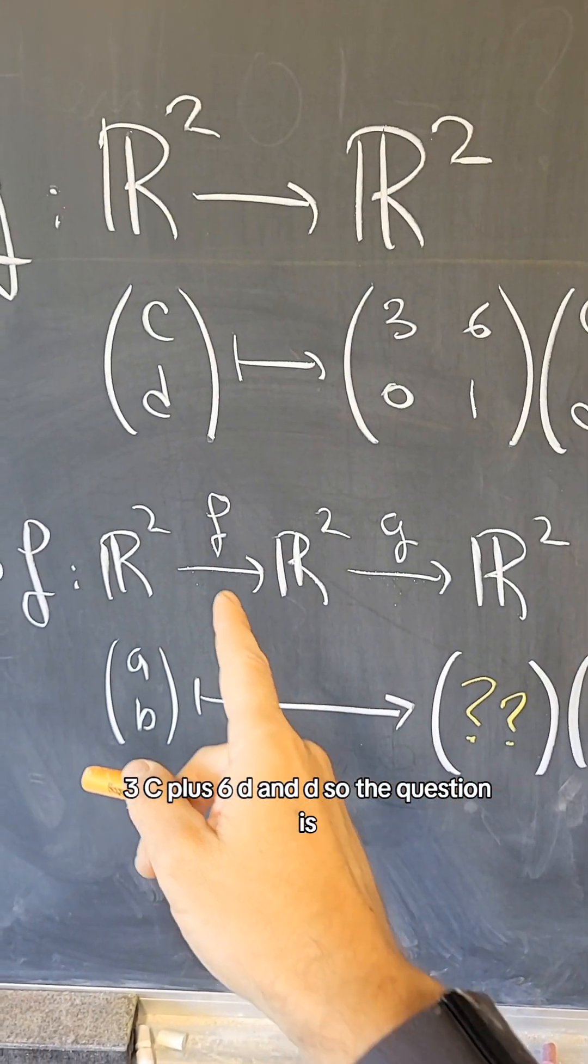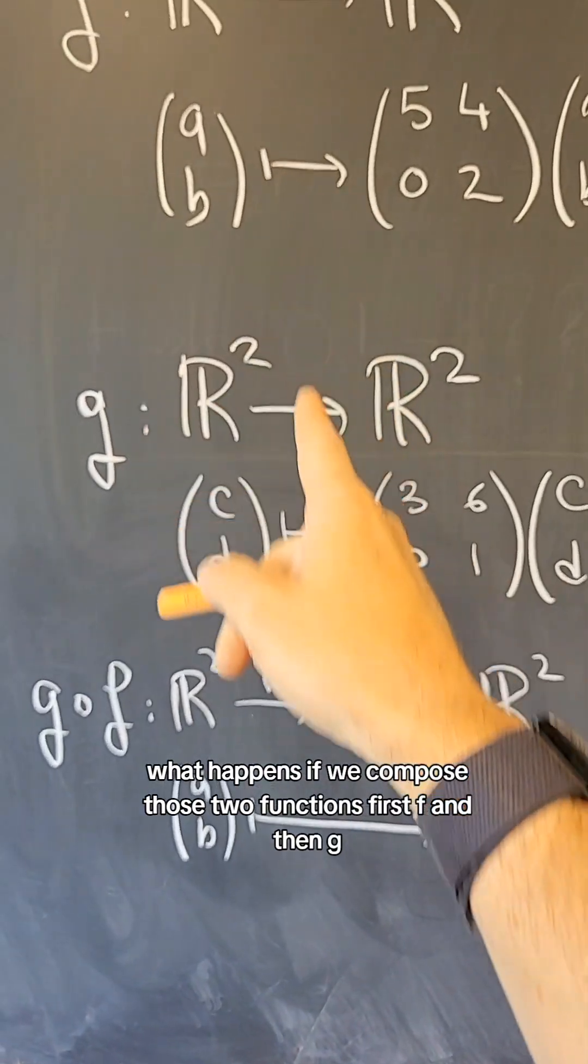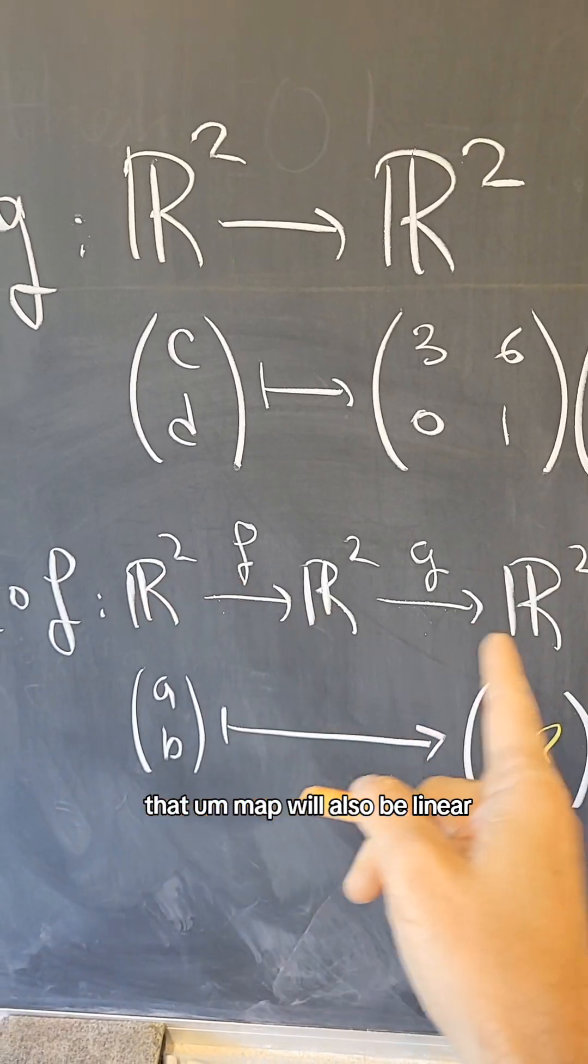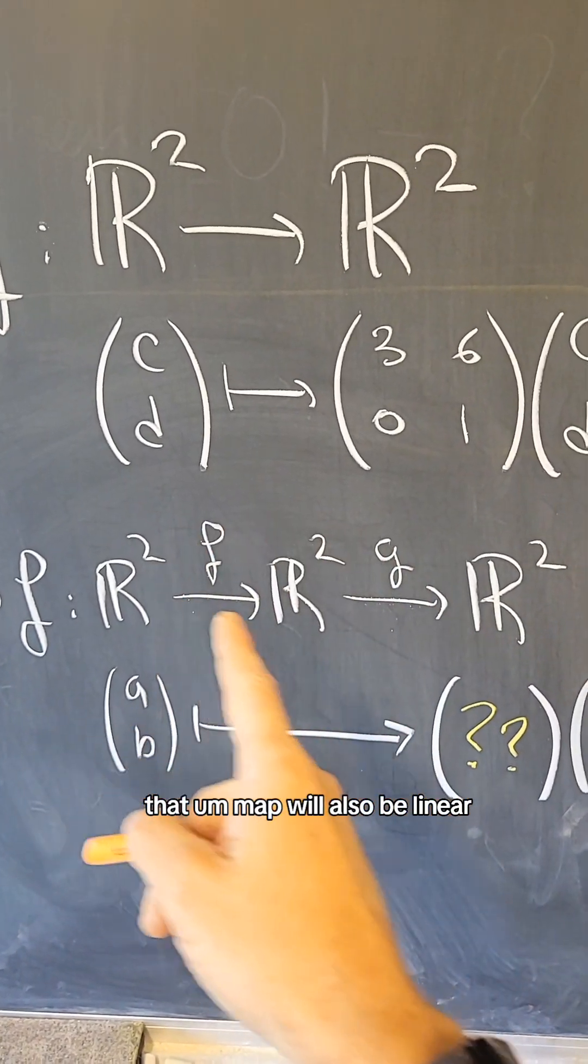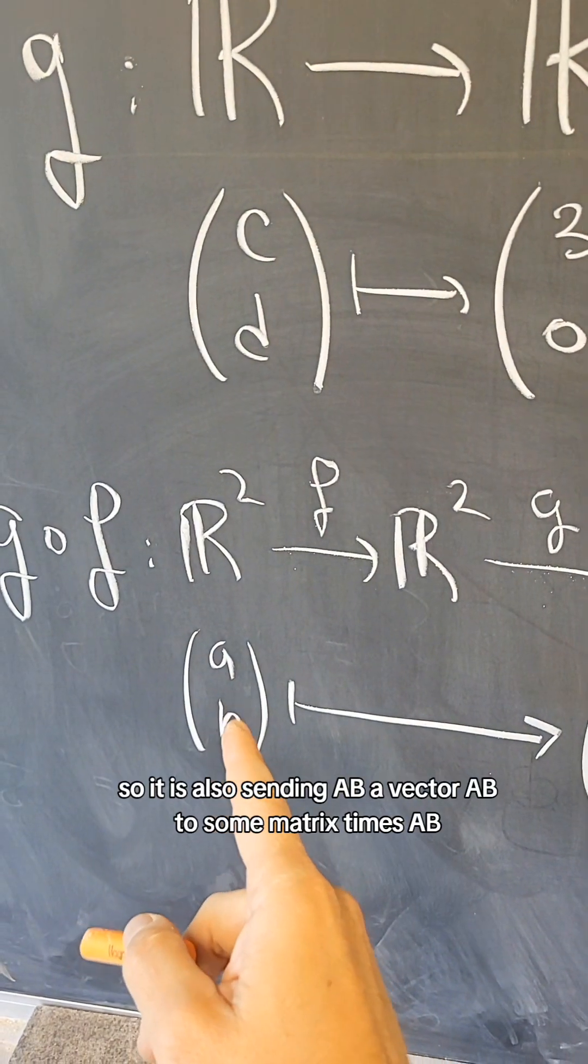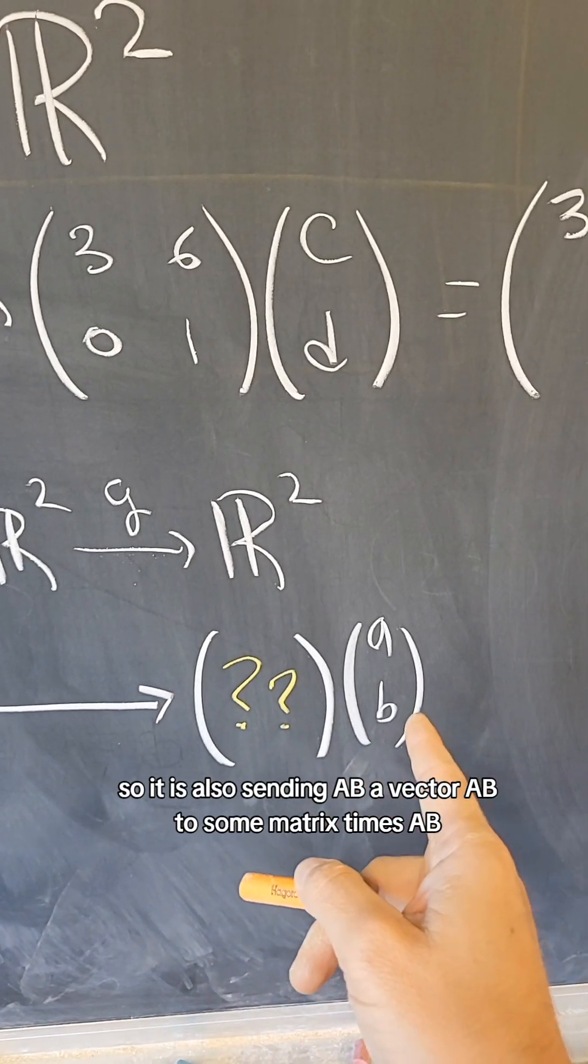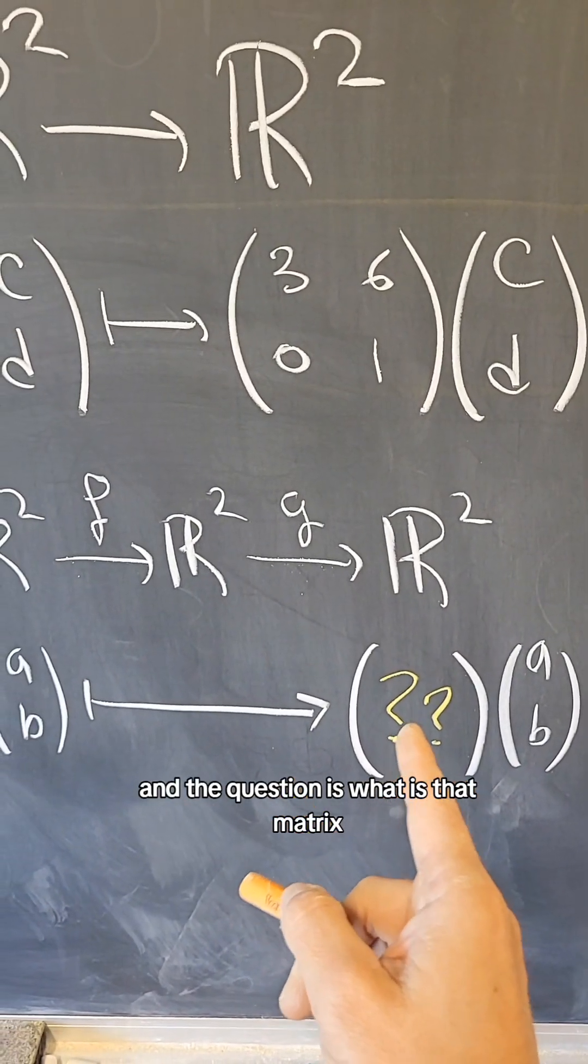So the question is, what happens if we compose those two functions, first F and then G? That map will also be linear, so it is also sending AB, a vector AB, to some matrix times AB, and the question is, what is that matrix?